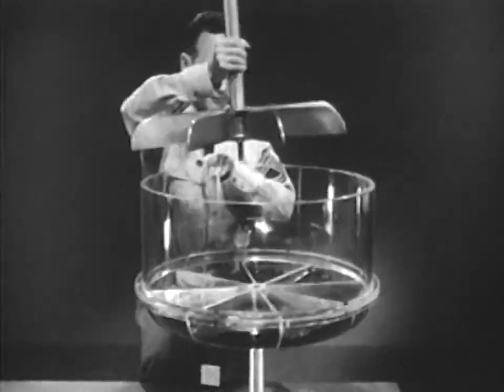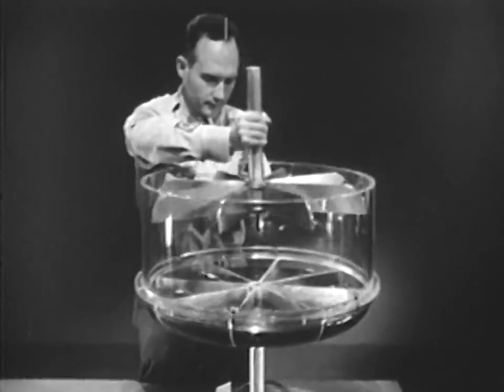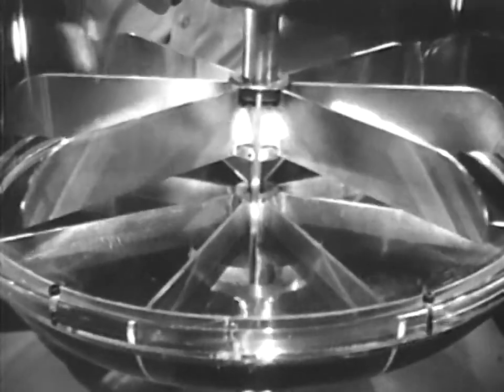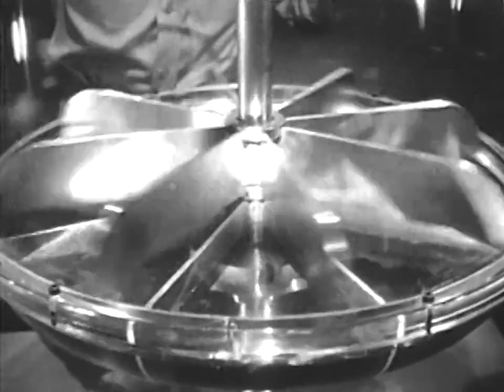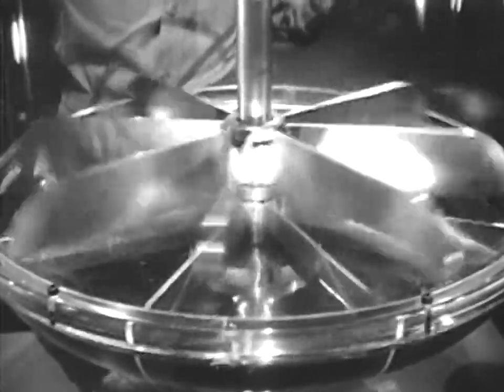Now let's see what happens when we add a second set of veins. Notice that this set is not connected to the bowl or lower set in any way, but can move freely.